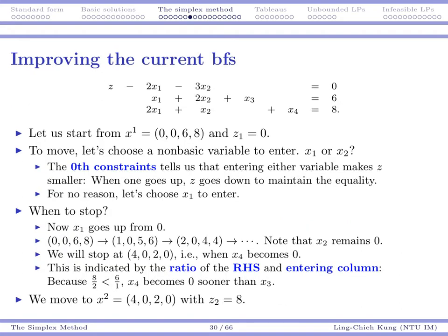So our initial basic feasible solution would have four variables: 0, 0, non-basic, and 6 and 8, basic. And 6 and 8 are here, 0, 0 are here. So your Z at this moment is 0.